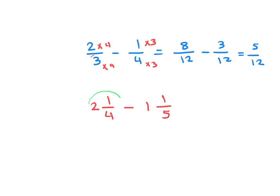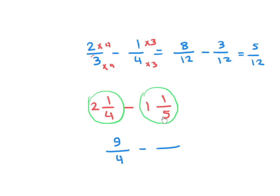It's better to convert the mixed number to an improper fraction first. To convert 2 and 1 over 4: 2 times 4 is 8, plus 1 is 9, so 9 over 4. For 1 and 1 over 5: 1 times 5 is 5, plus 1 is 6, so 6 over 5. Now we have two fractions and can subtract as before.